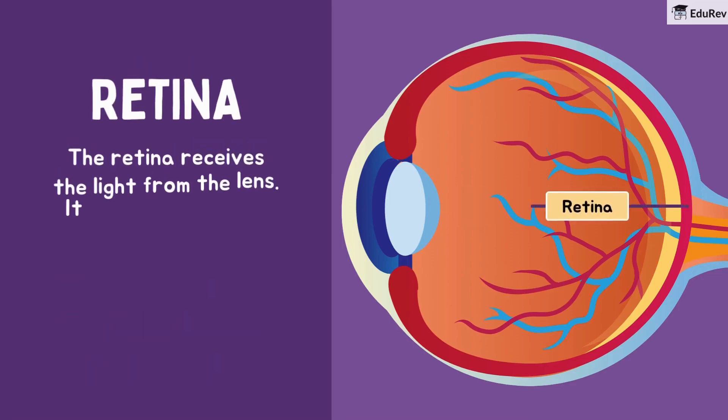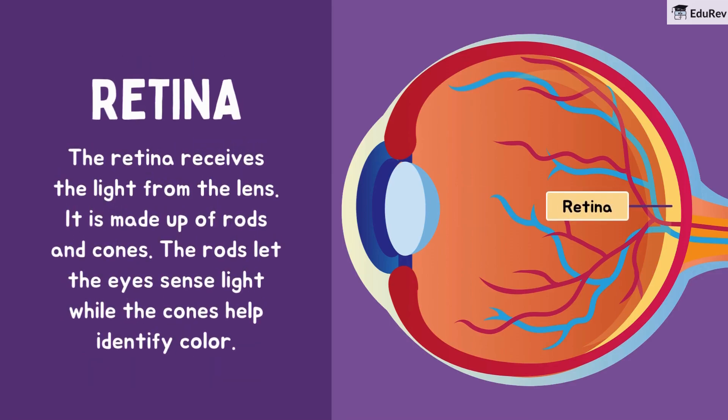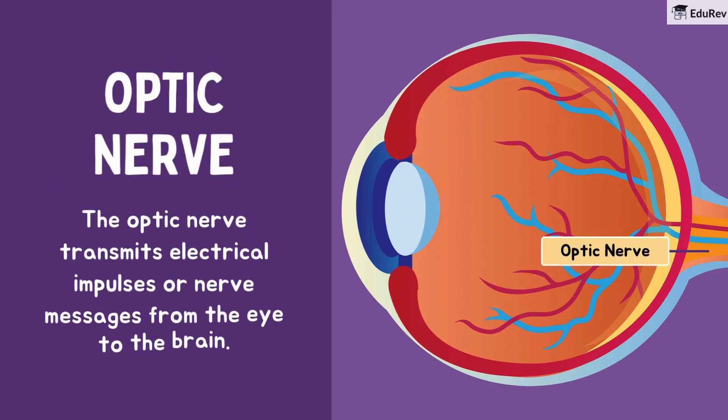Next up, the retina receives the light from the lens. It is made up of rods and cones — the rods let the eyes sense light while the cones help identify color. Lastly, the optic nerve transmits electrical impulses or nerve messages from the eye to the brain, helping us see things.